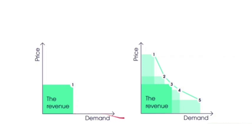Whereas with dynamic pricing, we are going to have multiple price points — number one, number two, number three, number four, number five. We can have an endless amount of price points and they can really increase your revenue because they will allow you to capture all of the profit to be made in that market.